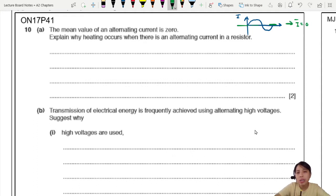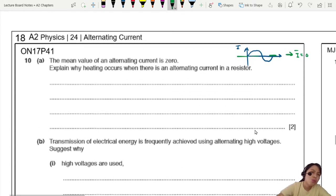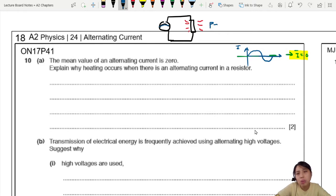Explain why heating occurs when there is an alternating current in a resistor. This is a good question. So if you connect an AC to, let's say, a resistor, why is it hot? Why does the resistor have heat when the mean is zero? Think about this for a moment. If the average current is zero, shouldn't the power or energy transfer also be zero? Think about it very carefully.